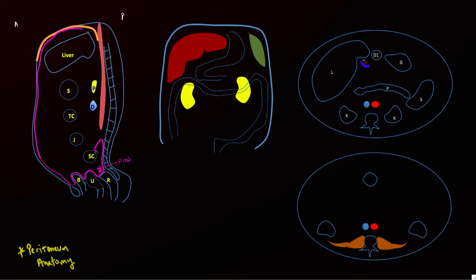As the peritoneal lining goes cephalad lining the posterior abdominal wall, it suspends several organs. First it suspends the sigmoid colon, then multiple loops of the jejunum, then the transverse colon — each forming named ligaments. The suspension of the transverse colon is the transverse mesocolon, the jejunal suspension is the small bowel mesentery, and the sigmoid suspension is the sigmoid colon mesentery.